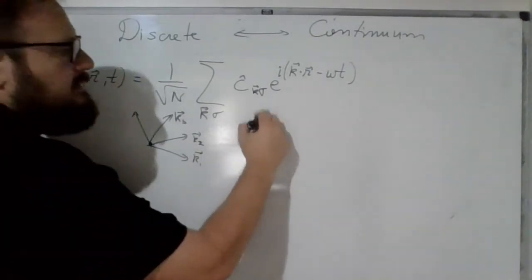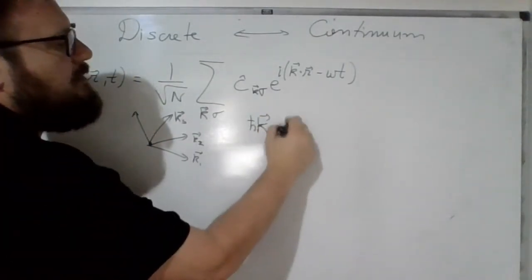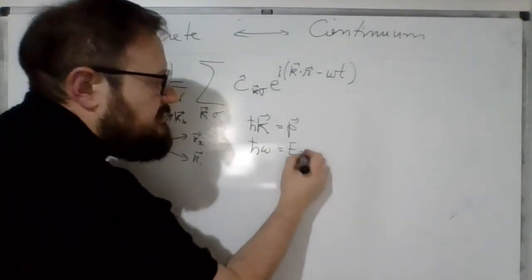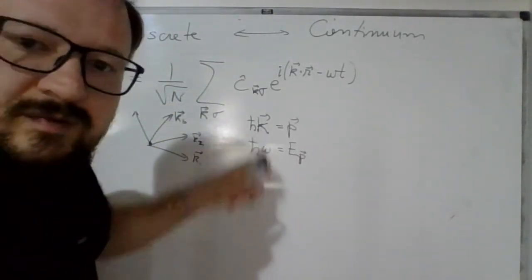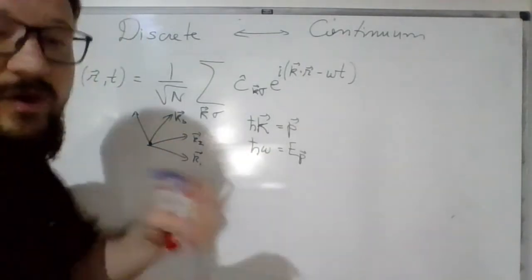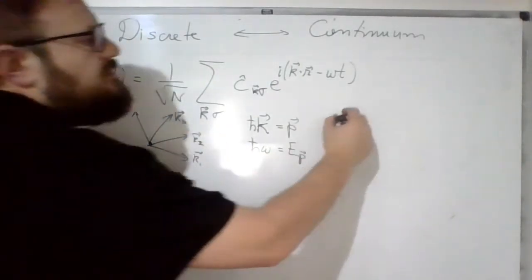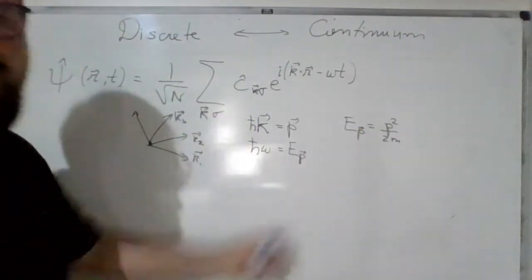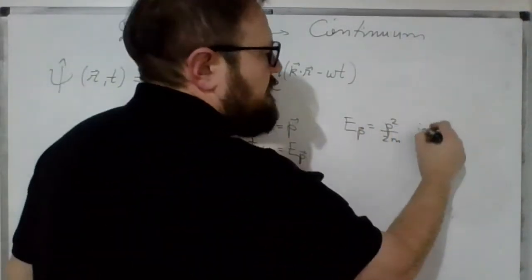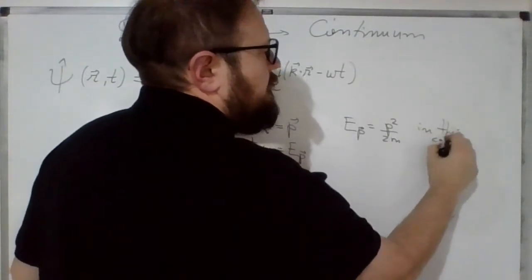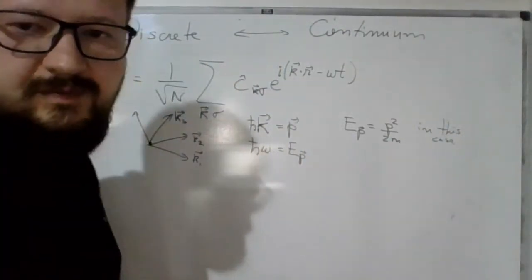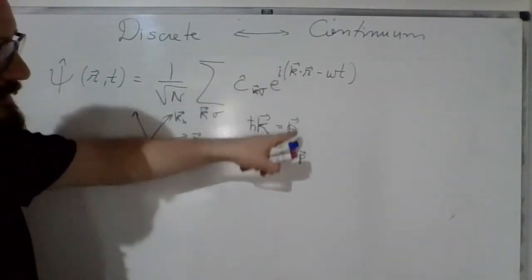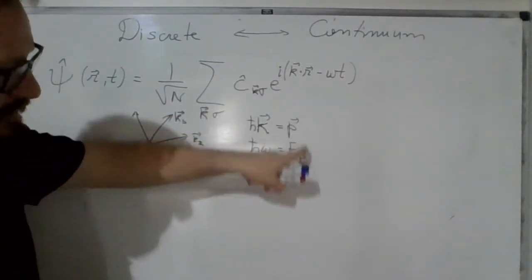Remember that k times ħ is momentum, and ħ times ω is the energy of the particle, which is a function of momentum through the dispersion relation. For our particular case — electrons — this corresponds to momentum squared divided by twice the mass. This dispersion relation gives the relation between momentum and energy.